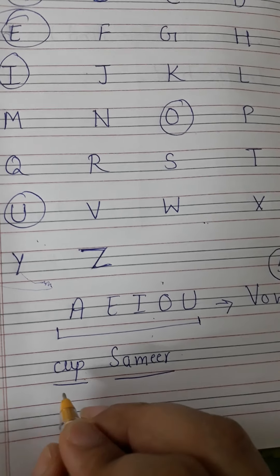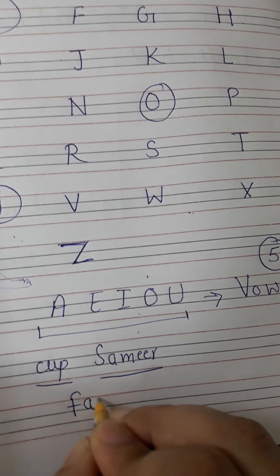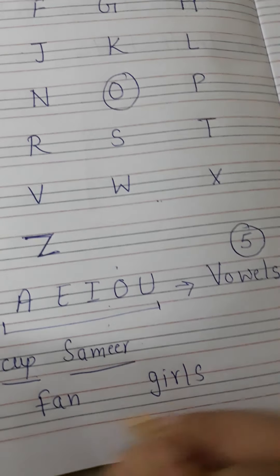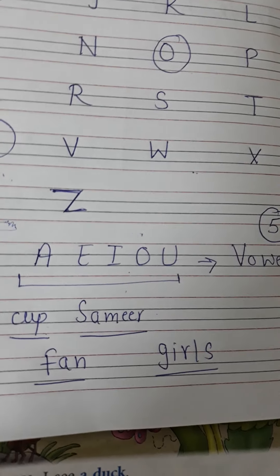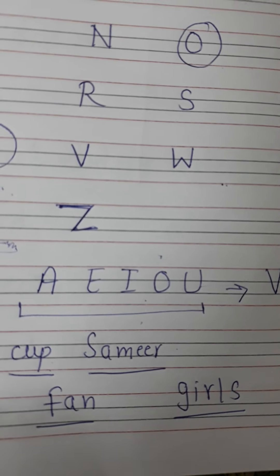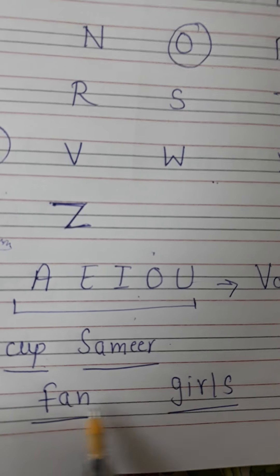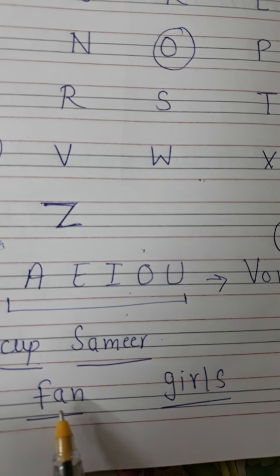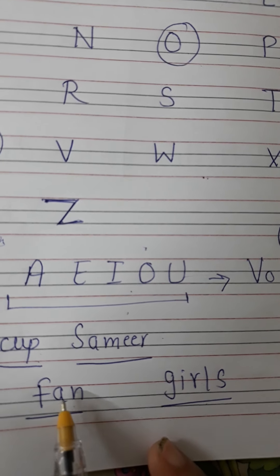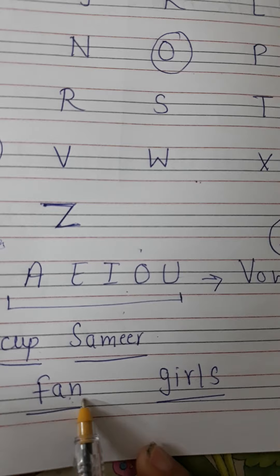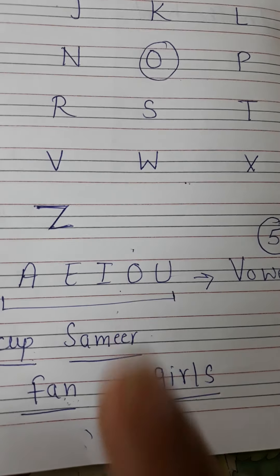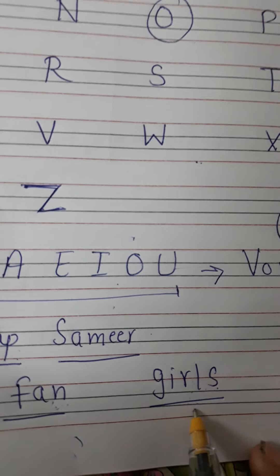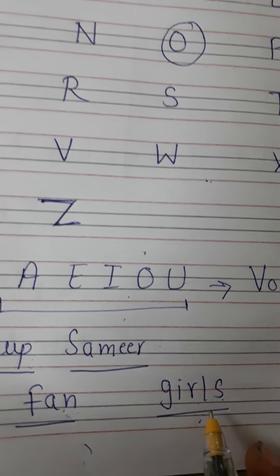Now listen carefully. If I say fan or if I say girls, do you feel any difference in these two words? Yes, there is a difference. Both of them are nouns. Right. Fan is a thing. So noun. Girls, person. So nouns. But what is the difference? The difference is that fan is singular noun. Fan is one. So it is a singular. Singular noun. And girls. There is S behind the girl which shows that it is plural. It's a plural noun. Singular noun. Plural noun. Got it?